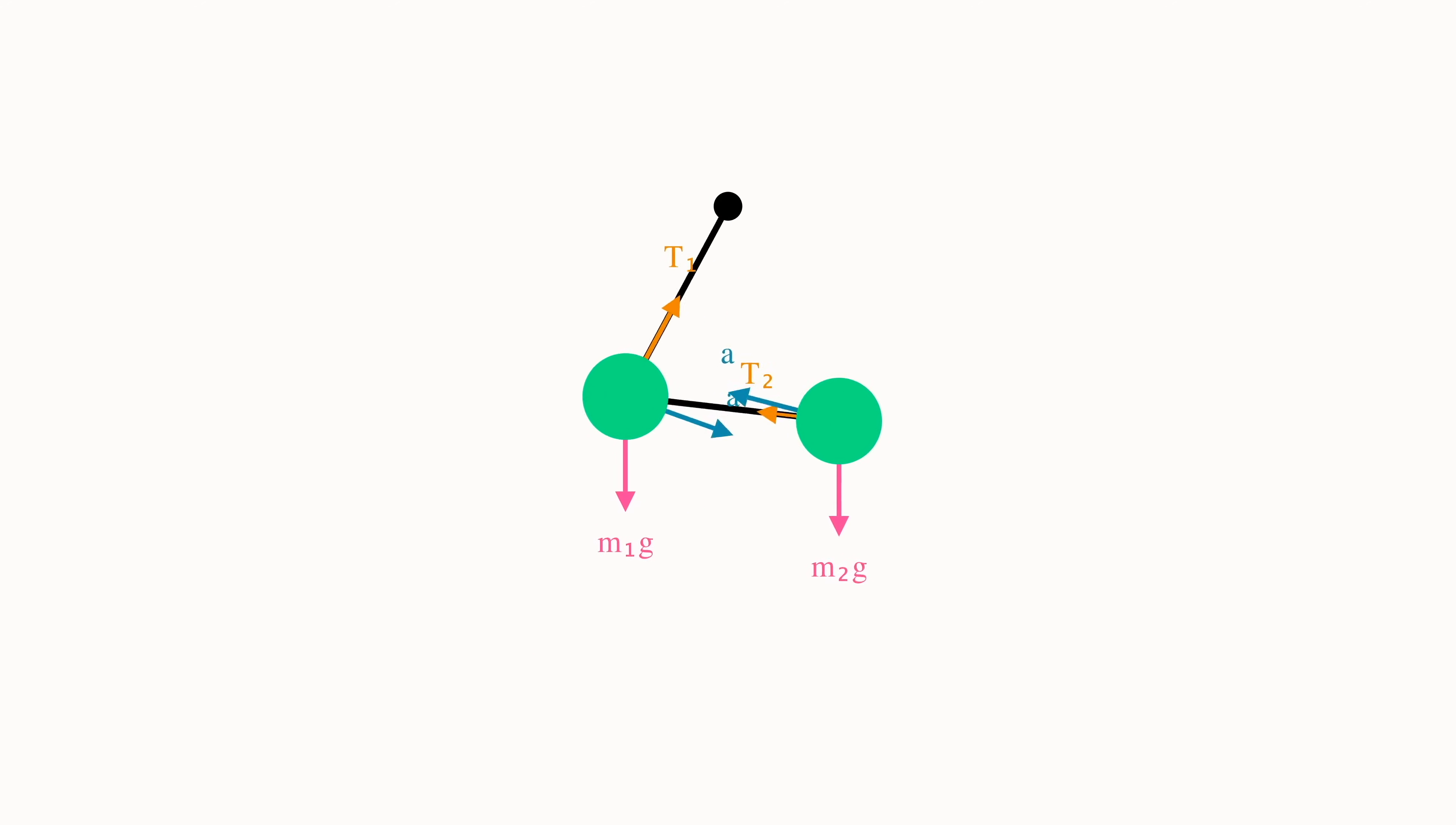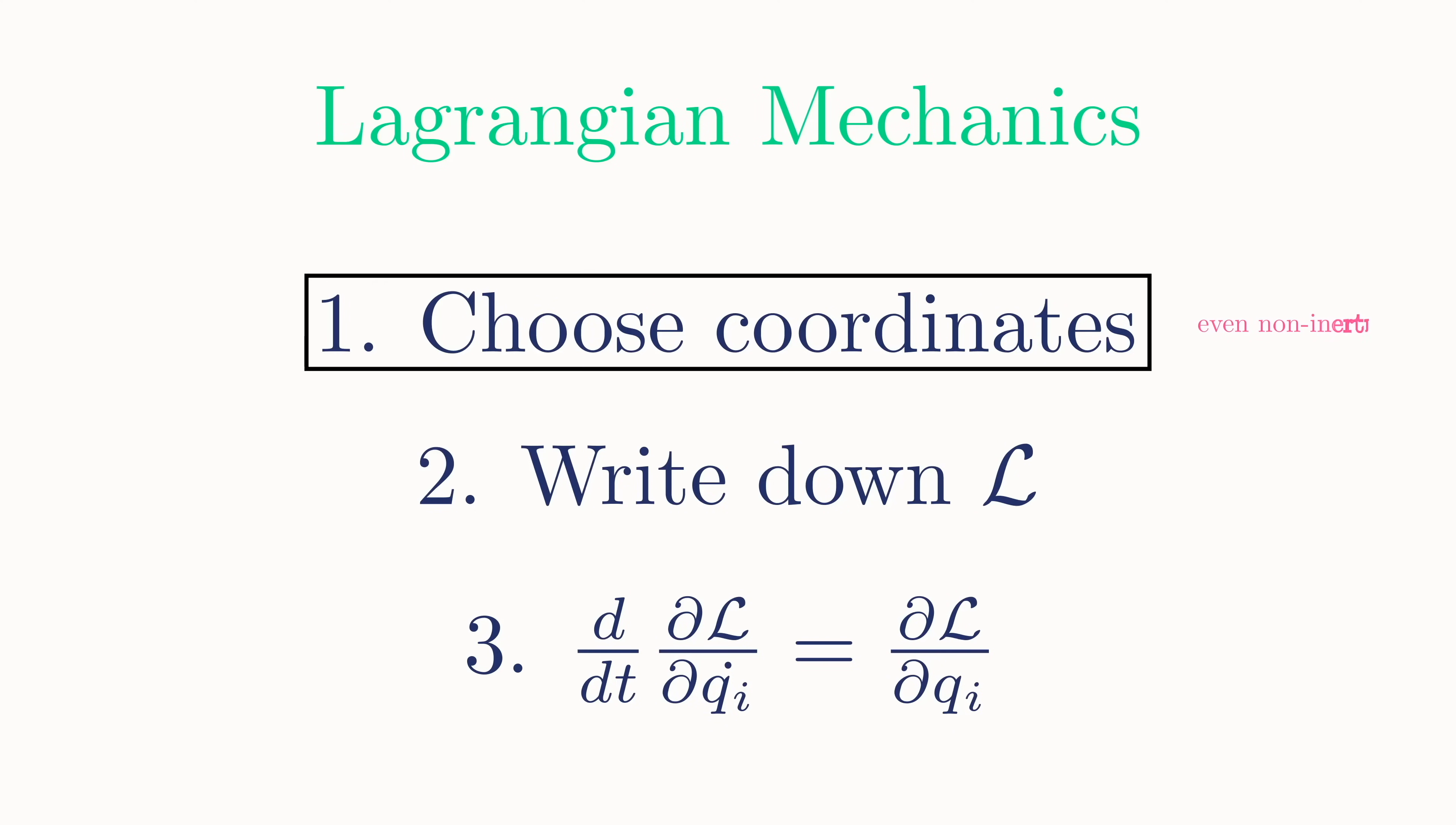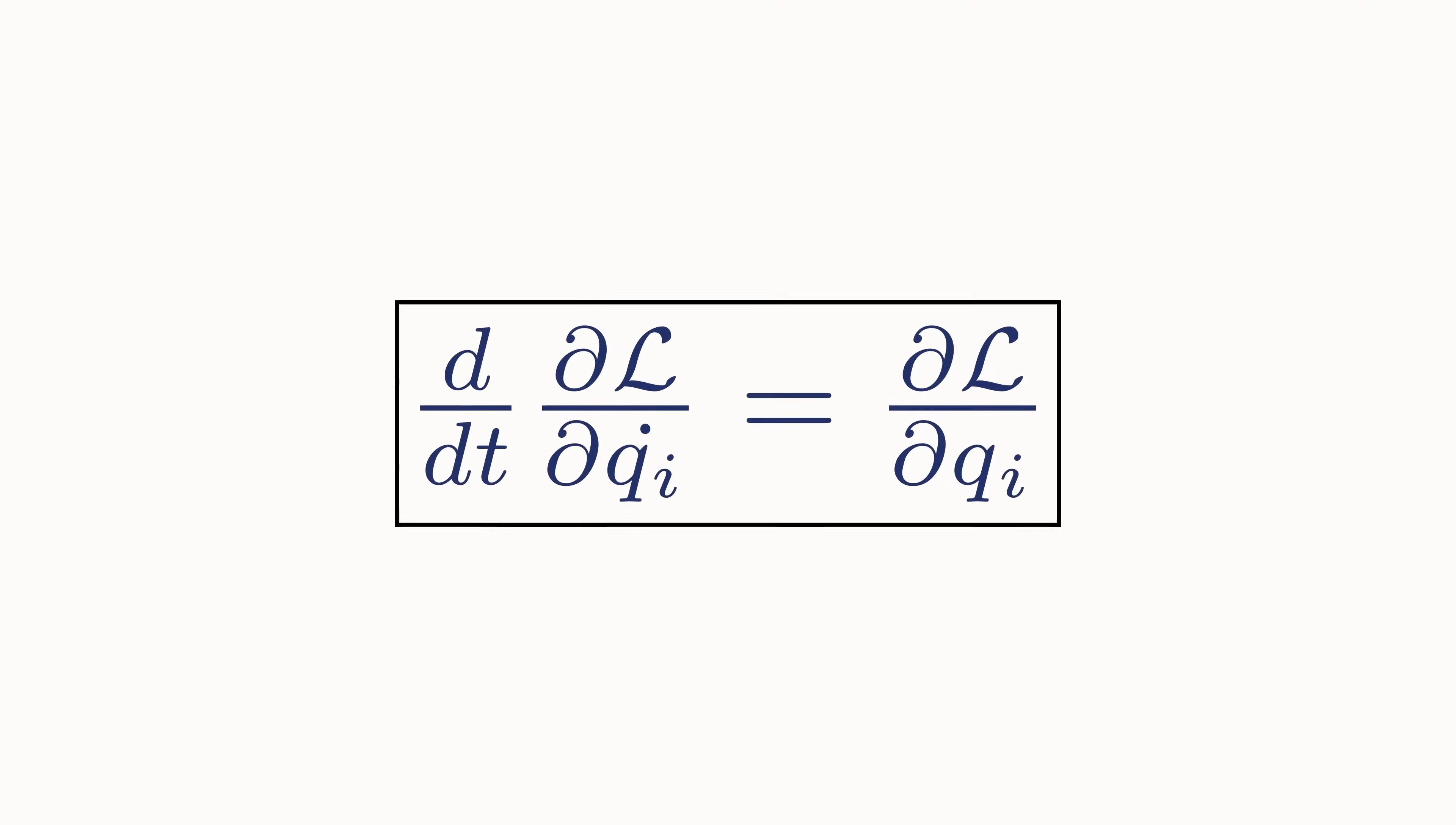Consequently, for most mechanics problems, the best strategy is to use Lagrange's approach as it will allow for a lot more flexibility. The recipe is straightforward. You can just choose whatever coordinates you like, write down the Lagrangian, and then solve the Euler-Lagrange equations for each of the coordinates. Thanks to the transformative work of Lagrange, solving classical mechanics problems has turned from complicated free-body diagrams to pure algebraic manipulation.